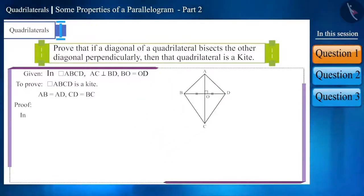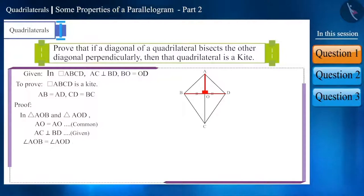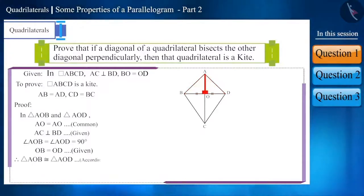Let's take triangle AOB and triangle AOD. Here, side AO is the common side. We are given that diagonal AC is bisecting diagonal BD perpendicularly. So, angle AOB is equal to angle AOD, each being right angles, and side OB is equal to side OD. Thus, these triangles are congruent according to the SAS congruence rule. The corresponding sides of congruent triangles are equal, so side AB is equal to side AD.